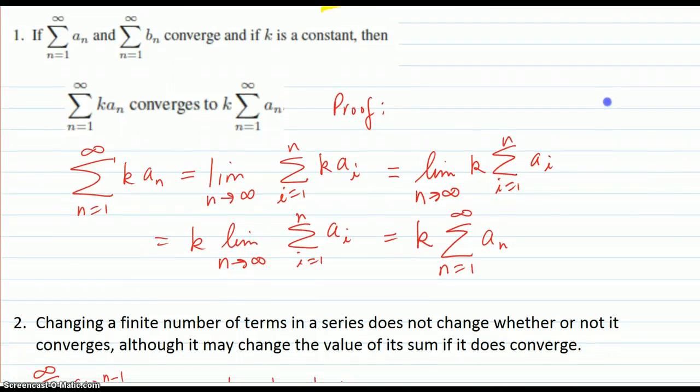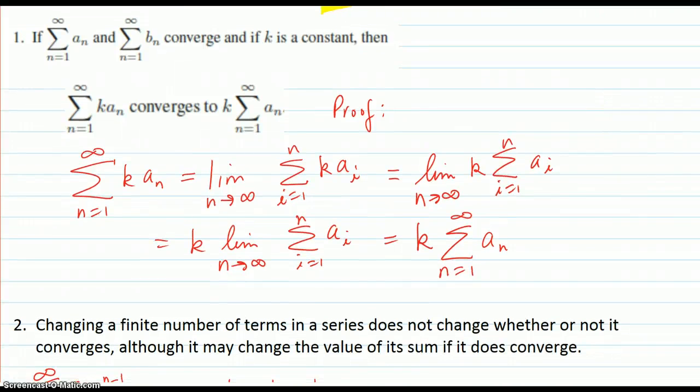The second property is: the series of k times each sequence term converges to k times the series sum. In other words, you can factor out the k.